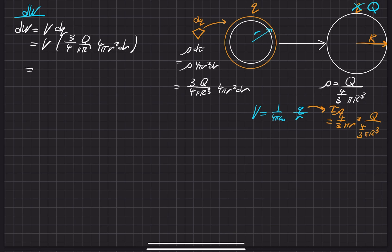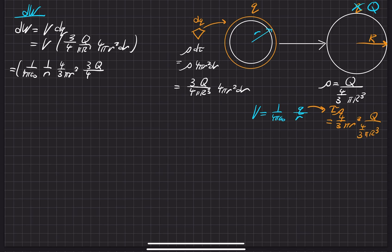Assembling the full expression for dW, I'll rewrite the potential with all substitutions. So we have V = (1/4πε₀) · (1/r) · (4/3)πr³ · [Q/((4/3)πR³)], and then multiply by dq = [Q/((4/3)πR³)] · 4πr²dr. This problem is a great exercise in really understanding exactly what the potential and the dq are — isolating these pieces carefully.